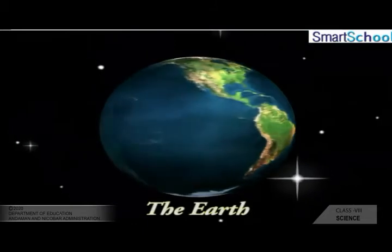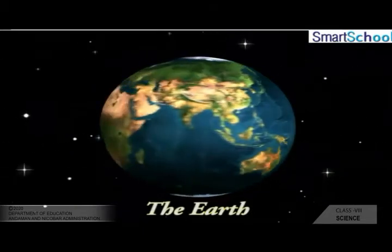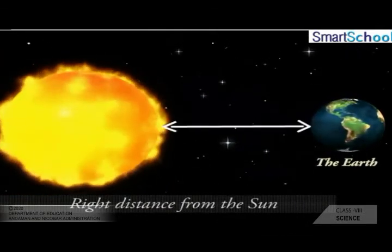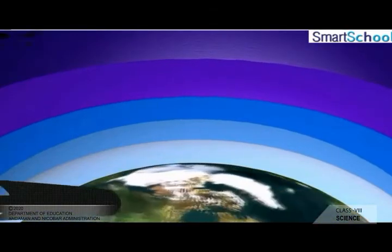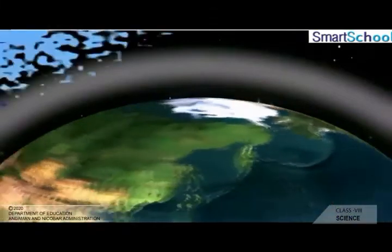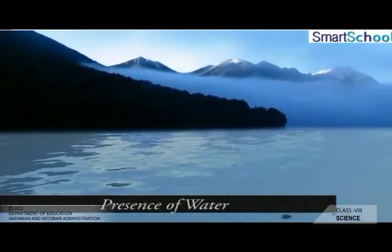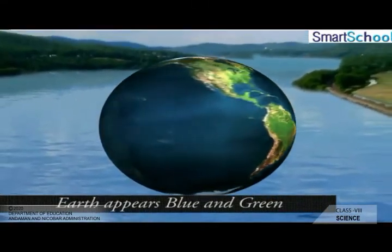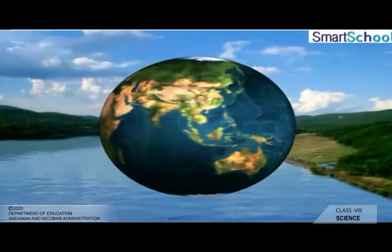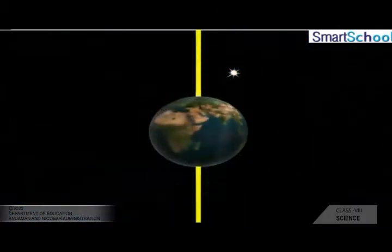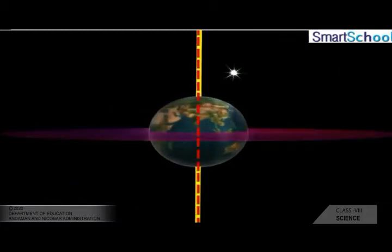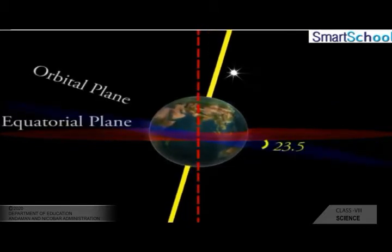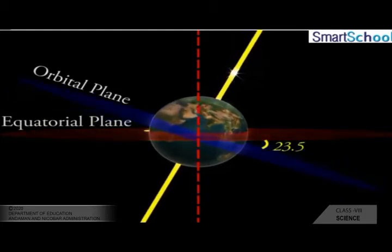The Earth is the only planet in the solar system on which life is known to exist, due to special environmental conditions: the right distance from the sun giving the right temperature range, a suitable atmosphere with an ozone layer, and the presence of water. Seen from space, Earth appears blue-green due to light reflecting from water and land. The axis of rotation of Earth is not perpendicular to its orbital plane — the two planes are inclined at an angle of 23.5 degrees. Earth has one natural satellite, the moon.